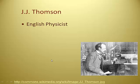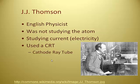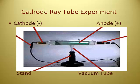JJ Thomson comes along — he's the next big scientist, an English physicist. He wasn't studying atoms specifically; he was studying current, electricity. He was using a device called the cathode ray tube. You can see him sitting next to his cathode ray tube with two wires coming off it. Our cathode ray tube in class looks a bit different — it's a glass tube, and inside is a vacuum, meaning there's nothing inside.